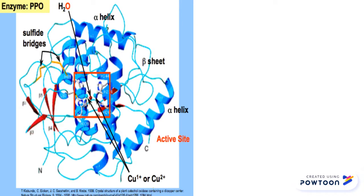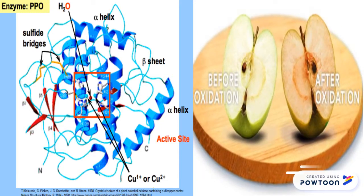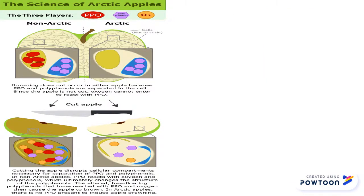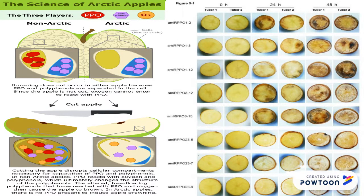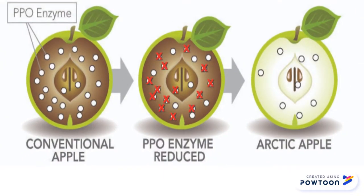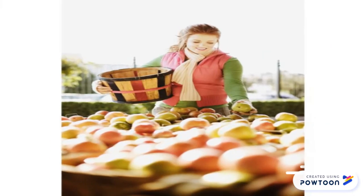PPO reacts with oxygen and polyphenols when an apple is cut, leading to browning. By discontinuing the production of PPO, it slows down the rate of browning and aging of the apples. The differences in compositional analysis between Arctic and conventional apples are small and would not adversely affect the nutritional quality of the apples or raise any safety concerns.